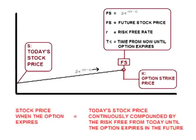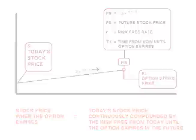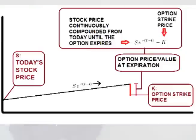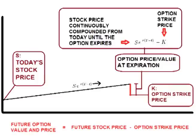Stock price when the option expires equals today's stock price continuously compounded at the risk-free rate from today until the option expires in the future. So now we have the future price of the stock when the option expires. To get the price and value the option on the day it expires, we take the future stock price and subtract off the option strike price. Future option value equals future stock price minus the strike price.